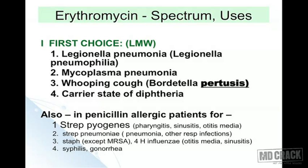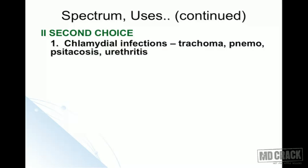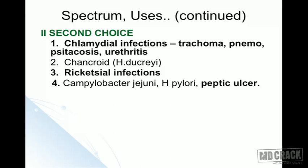Erythromycin is used as a drug of second choice for chlamydial infections — trachoma, psittacosis, urethritis, inclusion conjunctivitis, and pneumonia. Also for chancroid caused by Haemophilus ducreyi, rickettsial infections, Campylobacter jejuni, H. pylori peptic ulcer (macrolides are useful in H. pylori eradication), and Ureaplasma urealyticum.